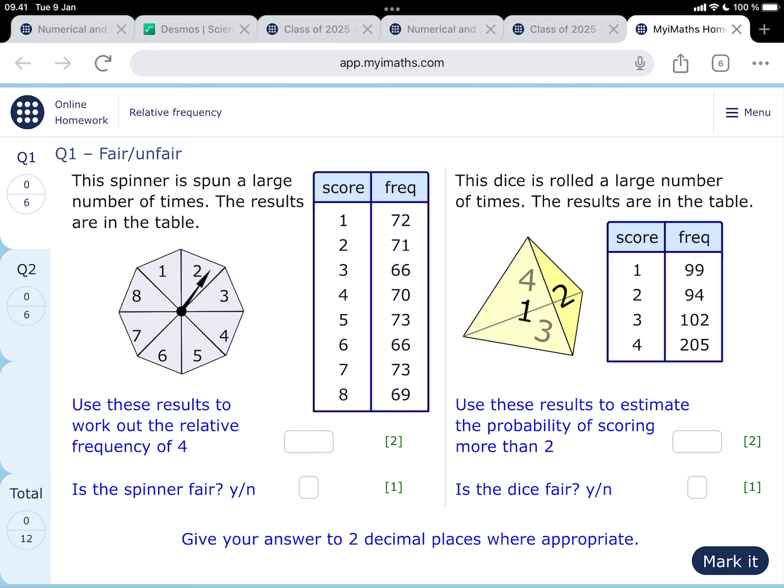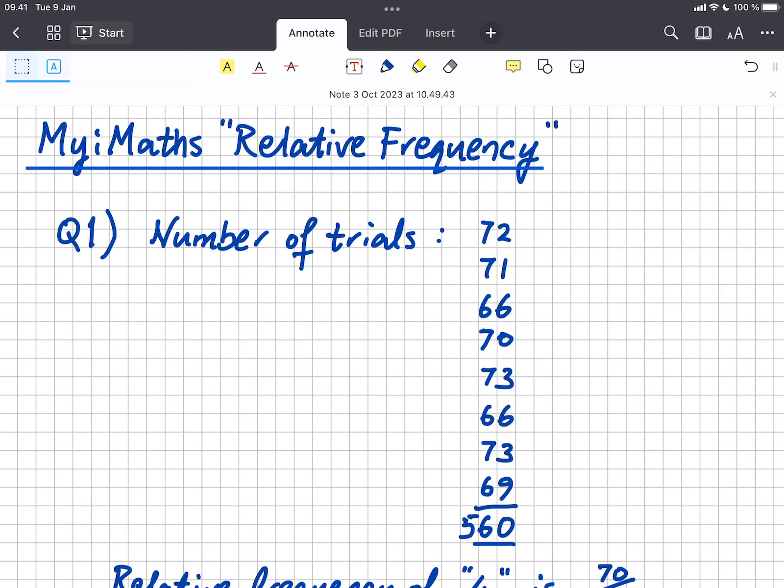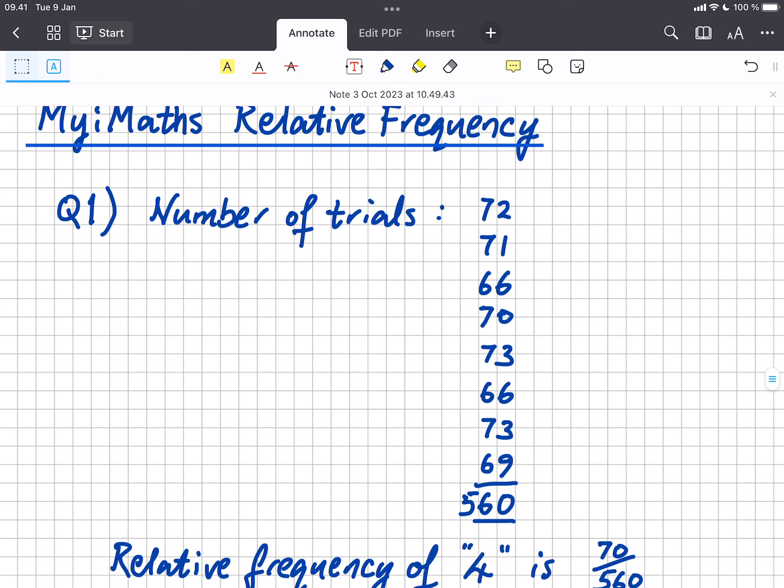Use these results to work out the relative frequency of four. So we've observed a four 70 times and we need to add up the number of times that we've spun the thing in the first place. In my book I've added up the number of trials. That's 72 plus 71 plus 66 and so on, all the times we've thrown the object, and that comes to 560 times that we've done it.